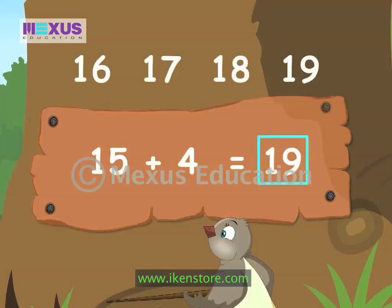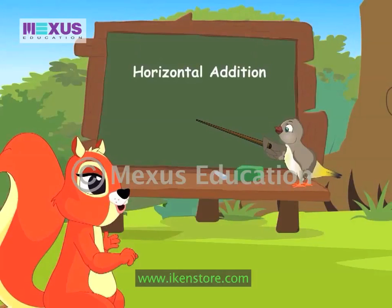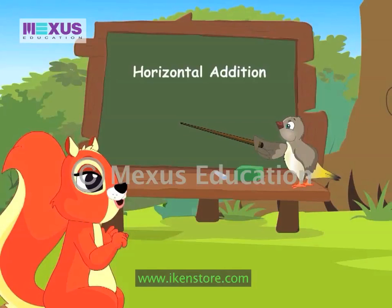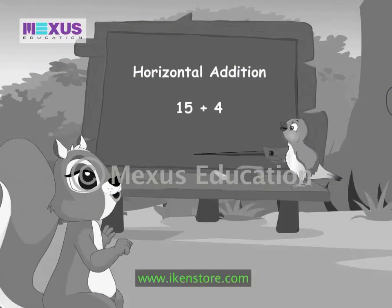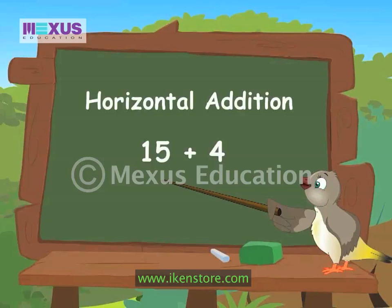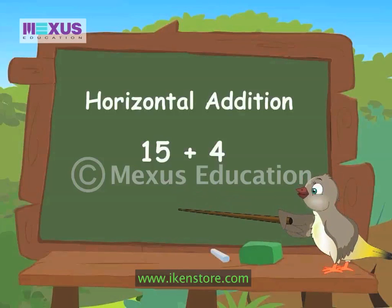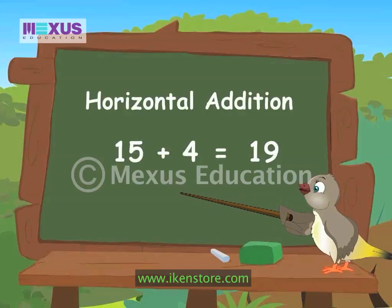Yay! You are correct, Amber. Now, let's see how to add numbers up to 20 using vertical and horizontal addition. Suppose we consider the example of adding 15 and 4. First, let's add it horizontally. So, Amber, what is the answer? To add 15 and 4, I count 4 numbers after 15 and get 19. Very good, Amber. Now, let's try adding this using the vertical method.